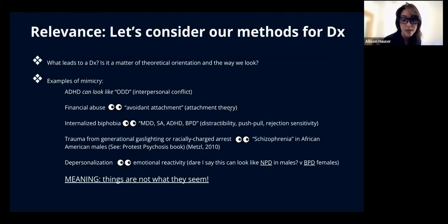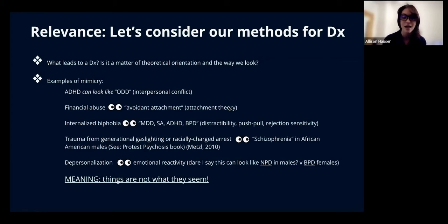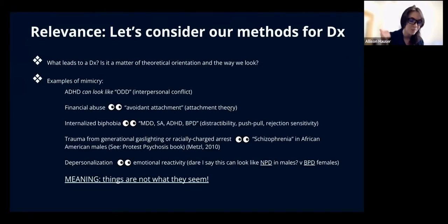A last example: if the client comes in very aggressive, hardcore, pushing at you, confronting, boundary violation, emotion quick to fire — let's say they're female, maybe we're going to direct our attention to BPD. Let's say they're male, maybe we're going to latch onto the pathway of NPD, narcissism. Just based on our perceptions, maybe our biases — we have them in this industry. Truthfully, emotional reactivity could be a version of depersonalization — like Rachel was saying, that flight reaction, that quick to fire, amped up. But we don't necessarily know that from the get-go. All of this is to say: things are not always what they seem.